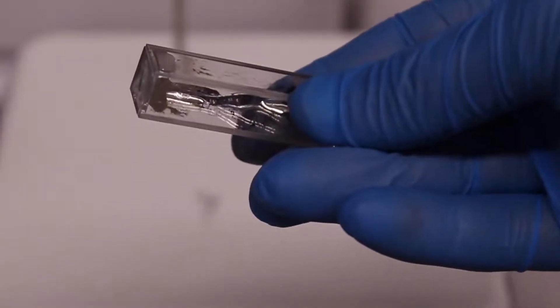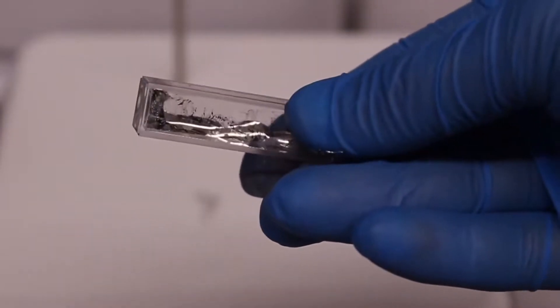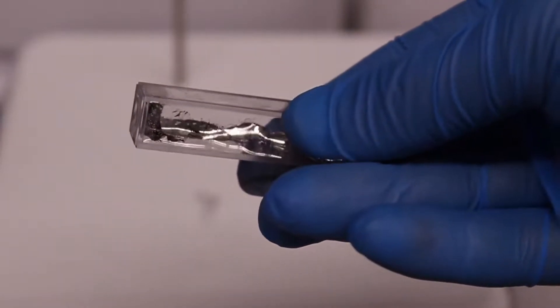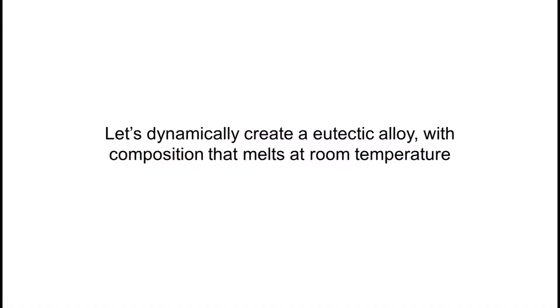Let's take another look at composition B, which clearly is a liquid. Now let's dynamically create a eutectic alloy. We start with gallium at almost room temperature, slightly higher around 30 degrees Celsius, and we put a piece of indium in there and we will see how they mix.